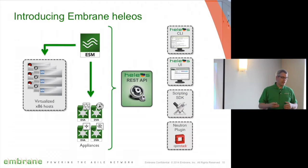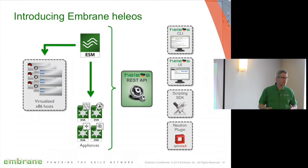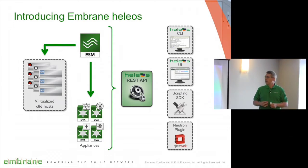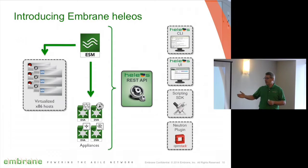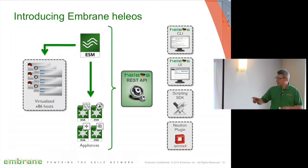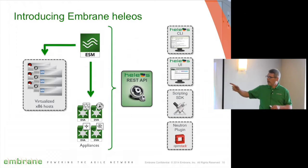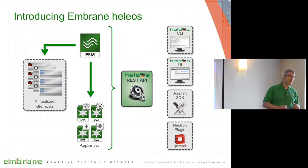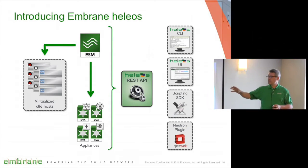The first building block of the model is virtualized x86 resources — servers that have hypervisors running on them. Today we support three hypervisors: ESXi version 5.x (we're dropping 4.1), Xen Server, and as of our last release, KVM.